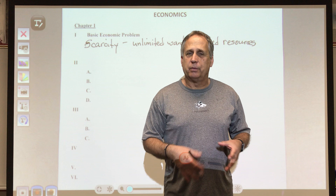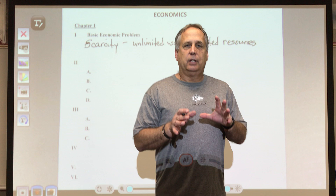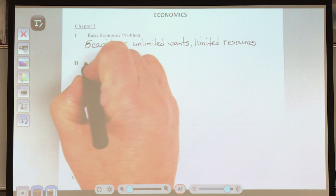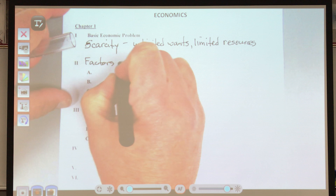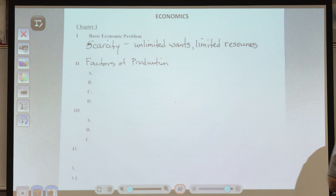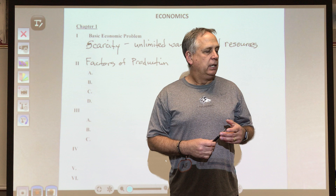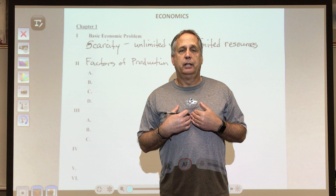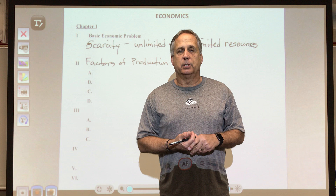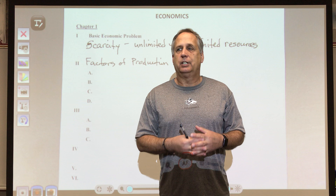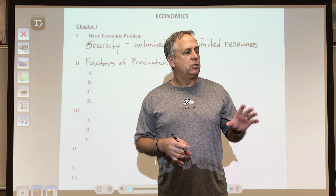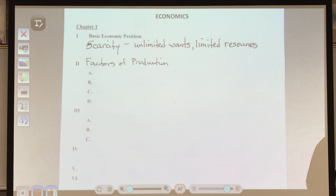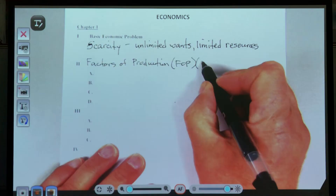Economists use different terms you may not have heard before. These resources are called the factors of production — it's everything that goes into producing everything we have. The scarcity problem is faced not just by individuals but also by businesses and governments. We have scarce resources; we don't have enough for everyone to get everything they want. Economists use the term 'factors of production' to describe these resources, also called FOP or economic resources.